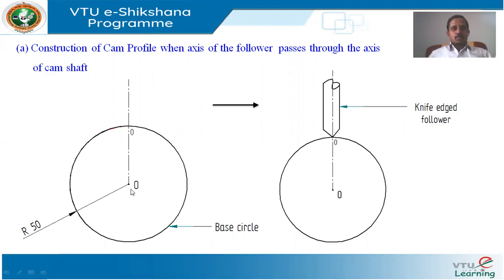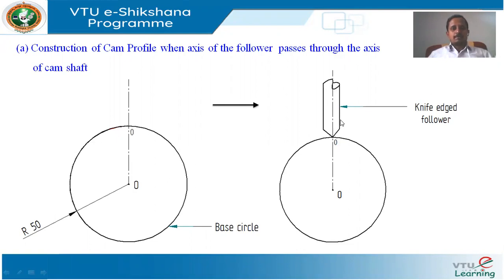Through point O, draw a line vertically upward with a thin straight axis line up to some certain position. Where this axis line intersects the base circle, mark that point and call it 0. According to condition A, the axis of the follower passes through the axis of the cam. With reference to this vertical axis line, from point 0, show the shape of the knife-edged follower — scale is not required but use proper tools — draw the knife-edged follower up to some certain height.